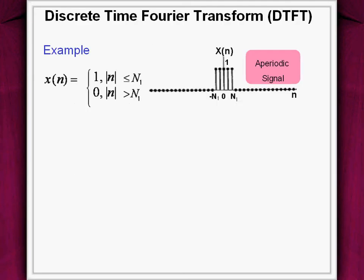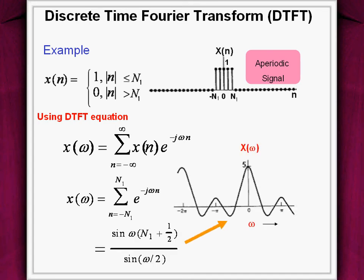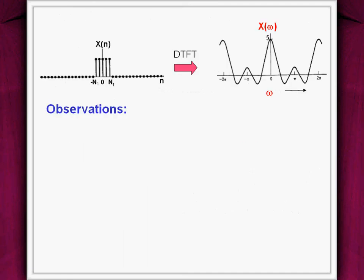To understand DTFT better, let us take an example of an aperiodic discrete time signal. Let us compute its frequency spectrum using the DTFT equation. As seen, the signal has unit magnitude only in the region between minus n1 to n1, and hence we replace the limits with minus n1 to plus n1 and solve.